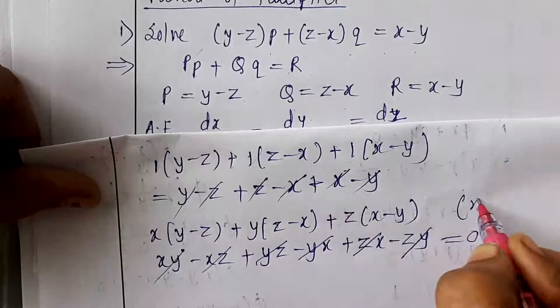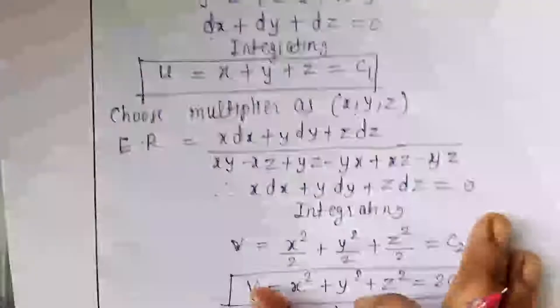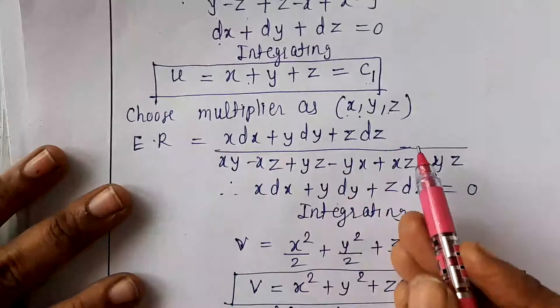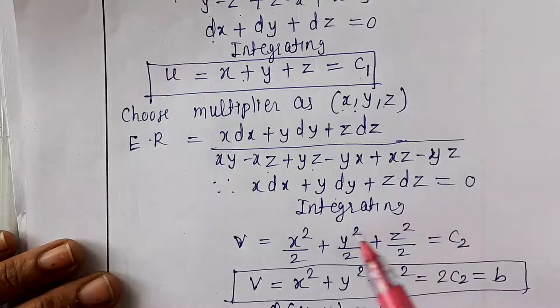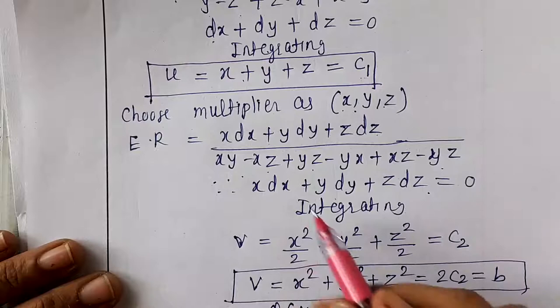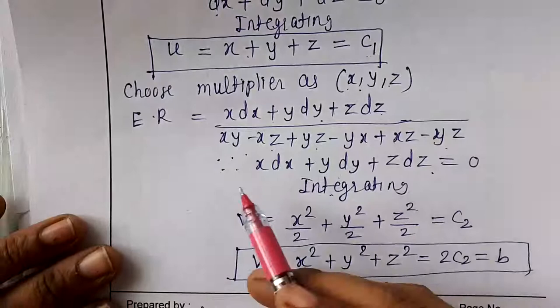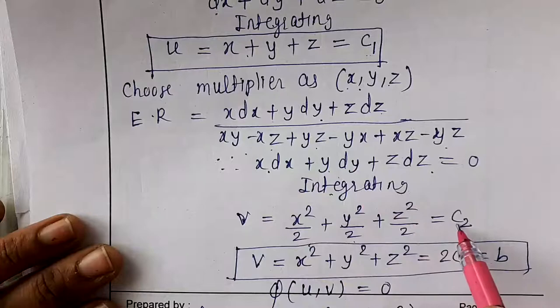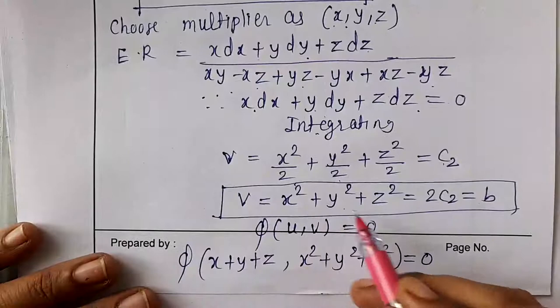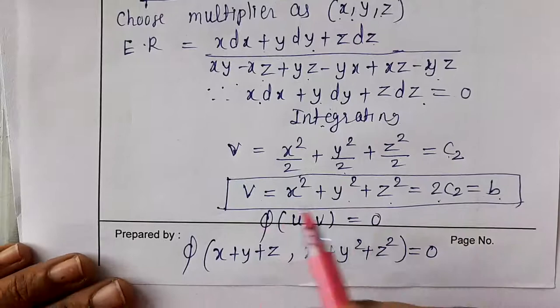With multipliers x, y, z, we get one more ratio: (x dx + y dy + z dz) / (denominator = 0). Since the denominator is zero, we set the numerator equal to zero: x dx + y dy + z dz = 0. Integrating gives x²/2 + y²/2 + z²/2 = c₂, so x² + y² + z² = 2c₂, denoted as v.